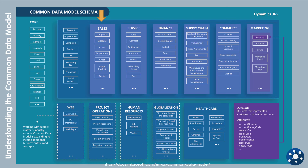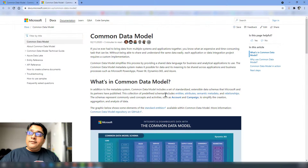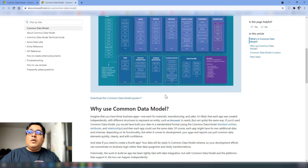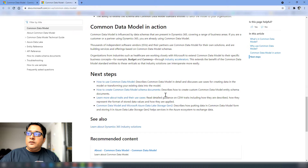There are schemas for Dynamics 365 apps and a growing number of accelerators including non-profit, healthcare, and automotive industries. If you want to know more about the Common Data Model, go to docs.microsoft.com where you'll find information on what the Common Data Model is, the main tables involved, why you can use it, and so on. There are a lot of resources available — please go ahead and have a look at that link.